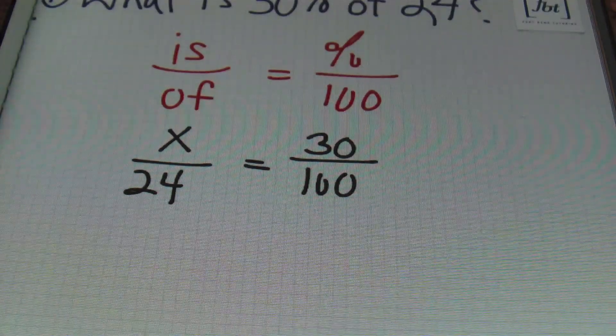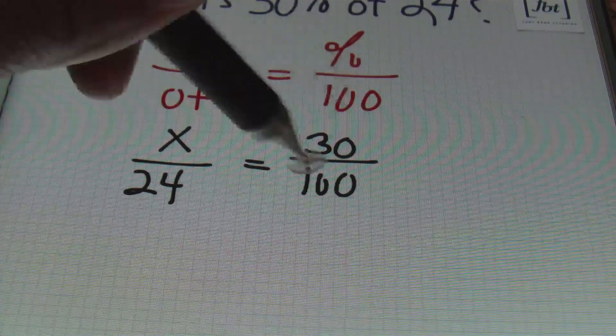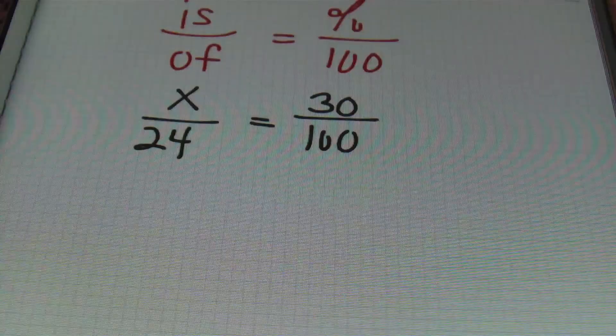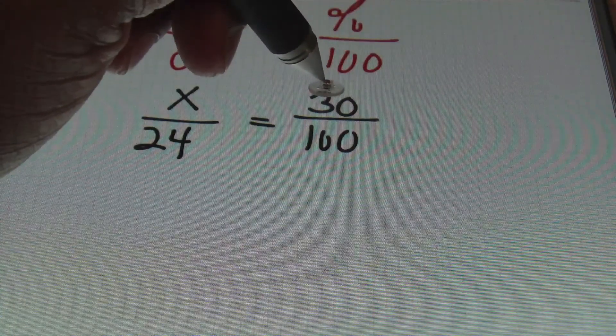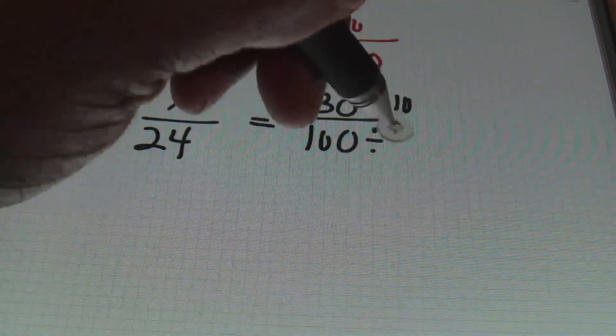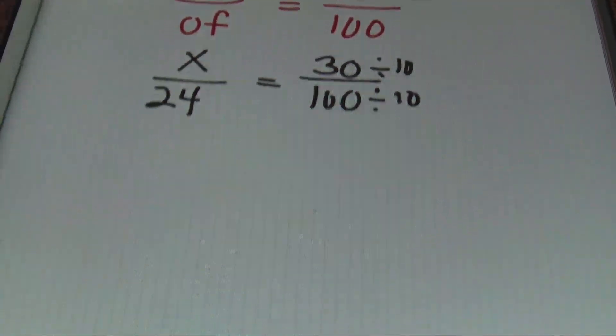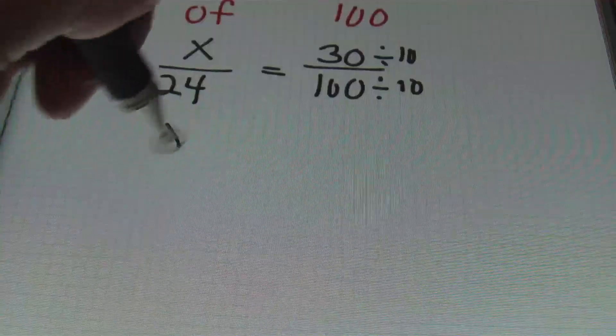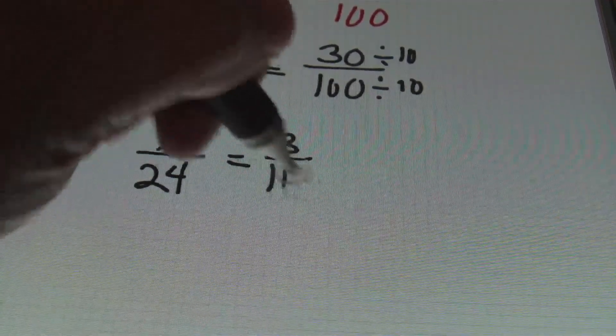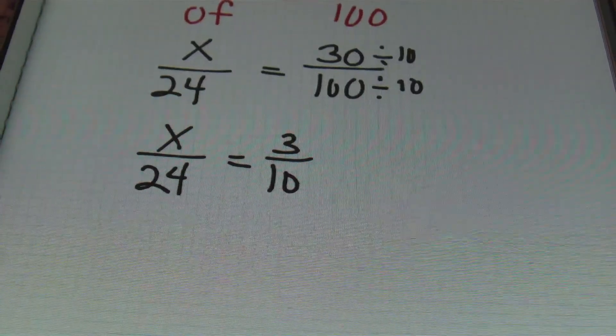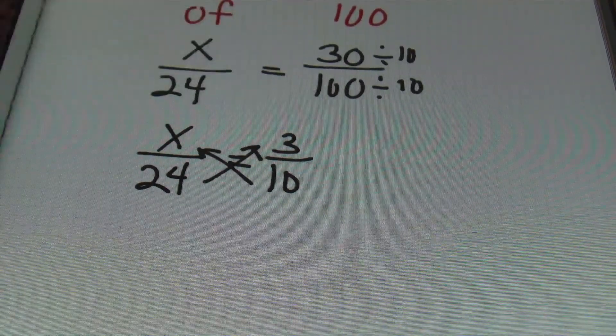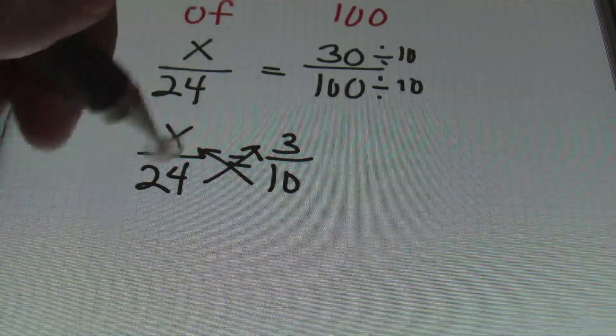So I've rewritten this problem as x over 24 equals 30 over 100. Because we have a fraction set equal to a fraction, you can always use the extremes-means method - another phrase for that is cross multiply. But I'm going to choose to simplify this fraction first because I don't like dealing with big numbers if I don't have to. So I can reduce both the 30 and the 100 by 10.